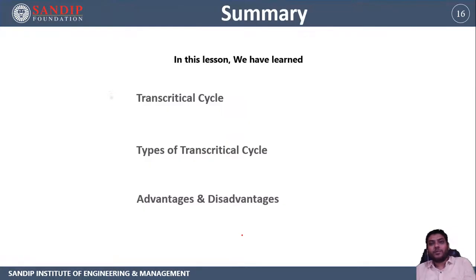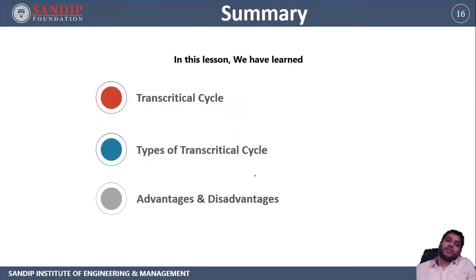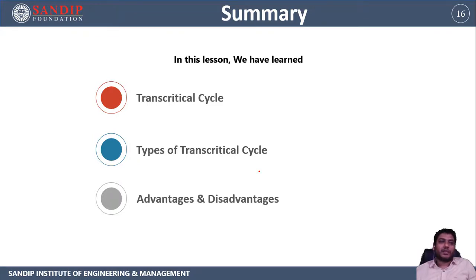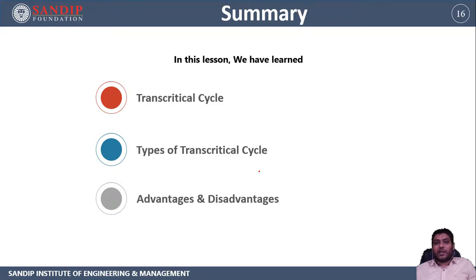In this lecture we learned about the transcritical cycle: the different types, the pH and T-s diagrams, how the cycle works, the construction and working of each transcritical cycle type, how to calculate the COP, and the advantages and disadvantages. This cycle has certain advantages while also having many disadvantages. This is the conclusion of this session — I hope you liked it. Thank you.